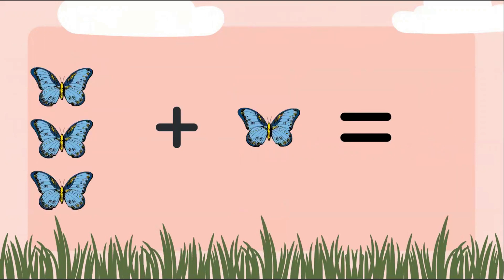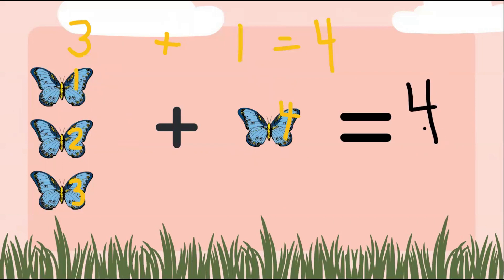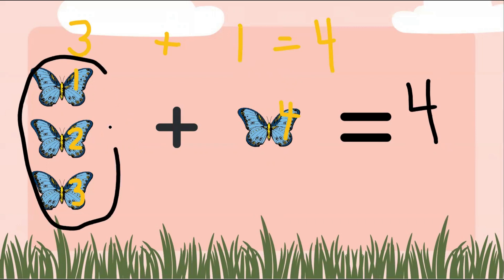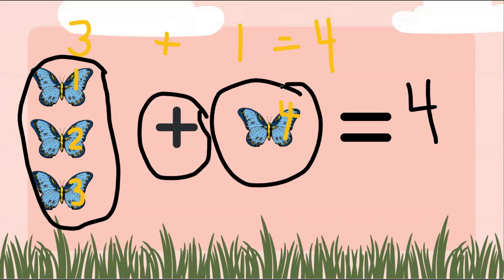Let's count our butterflies. Here we go: one, two, three, four. We have three butterflies plus one butterfly, and that gives us four butterflies. So our answer is four. We have our three butterflies, then we add our one butterfly to make a total of four butterflies.